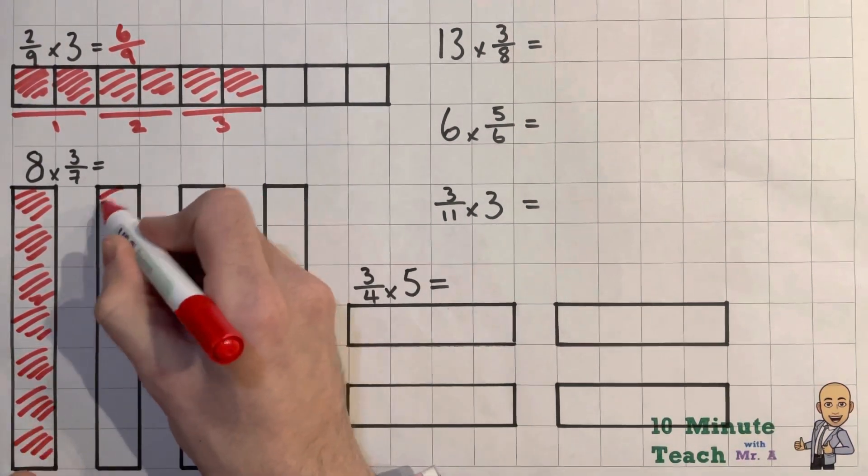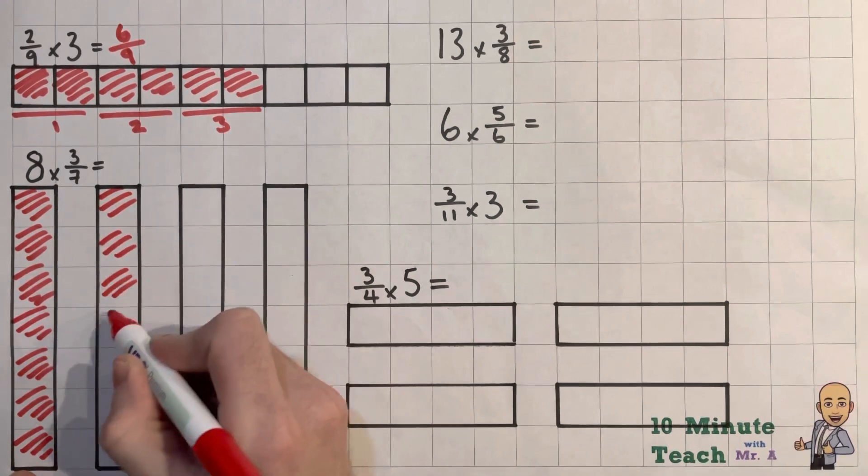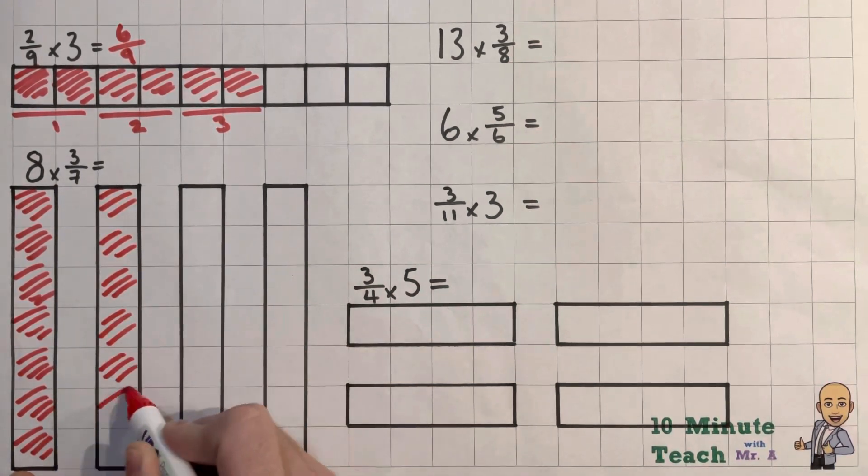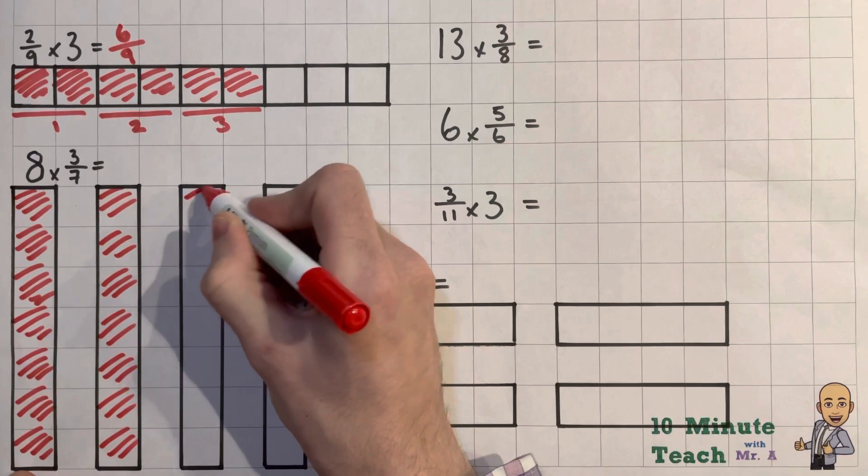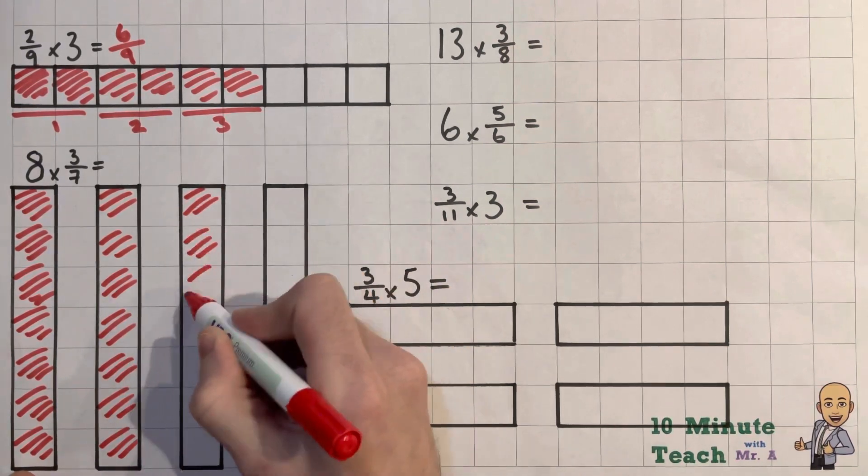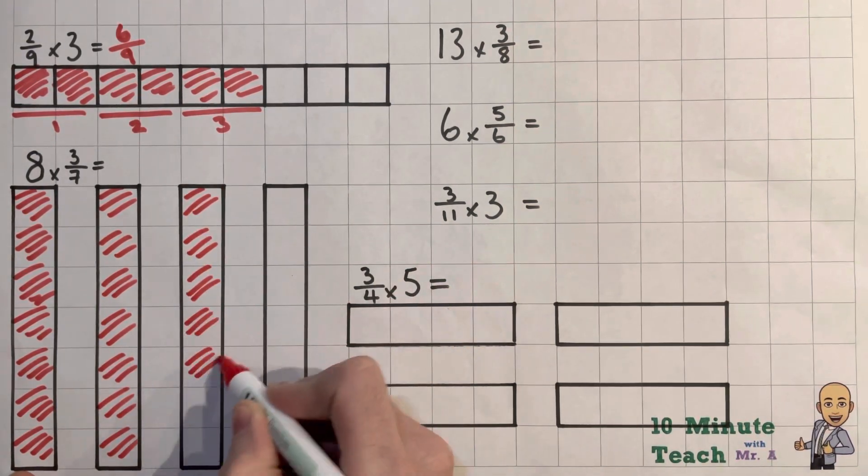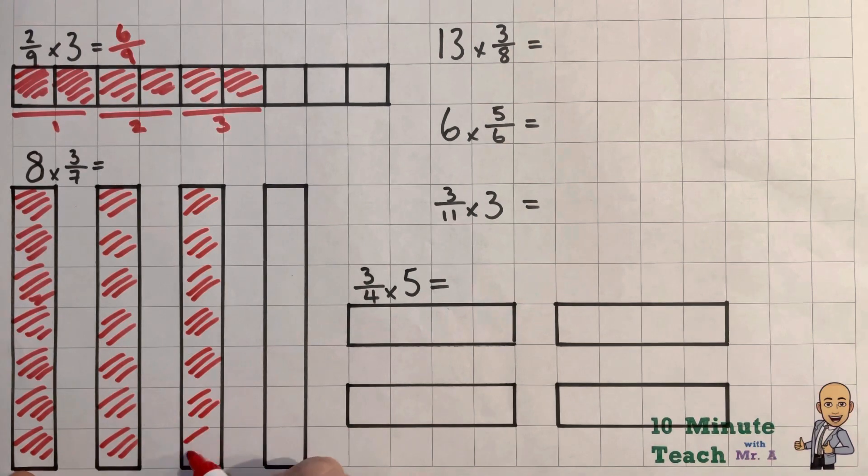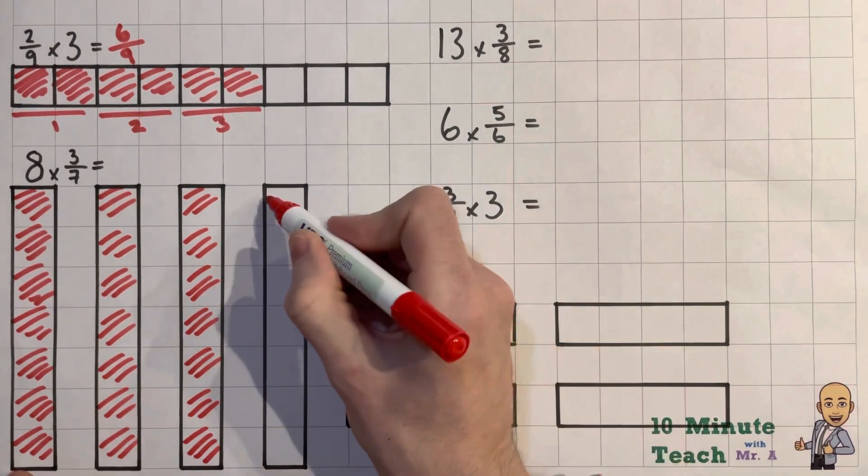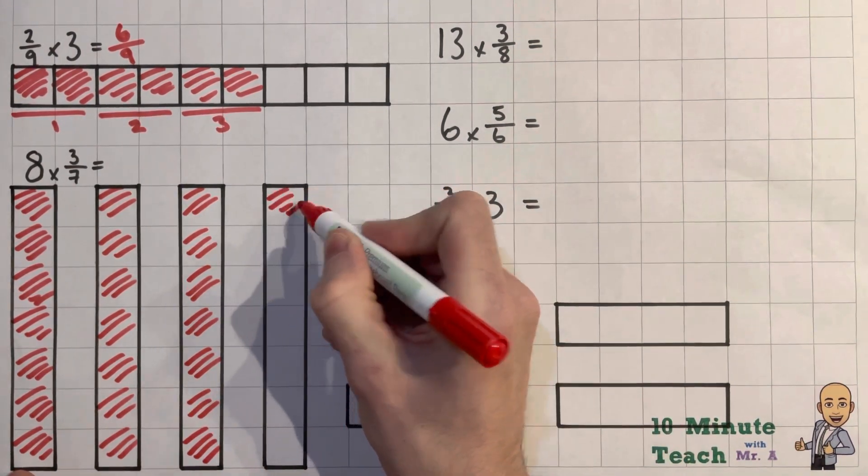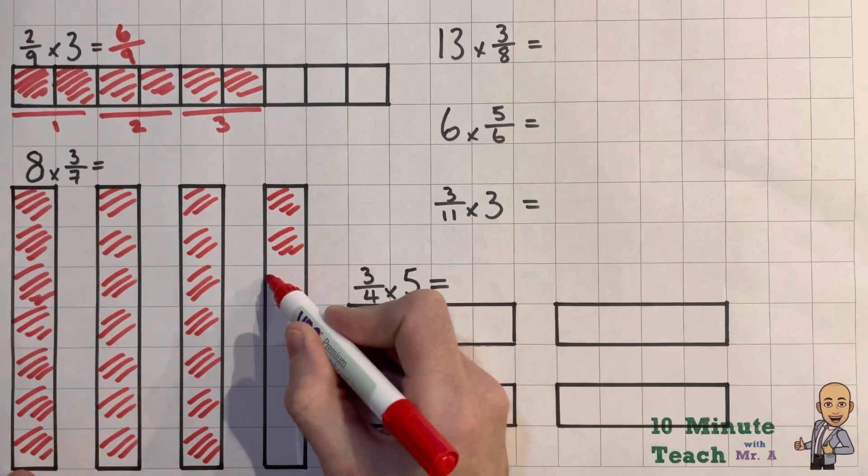So there's 7, 14, 15, 16, 17, 18, 19, 20, 21. Let's have a look. 22, 23, 24.